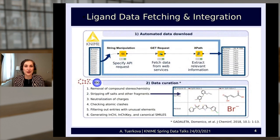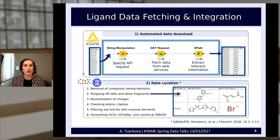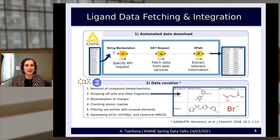To automate the whole procedure we used KNIME, taking advantage of programmatic data access via application programming interfaces (APIs). We specified an input data table with UniProt IDs corresponding to certain protein targets, passed it to the string manipulation node to create a specific API request, fetched data from web services using the GET request node, and finally extracted the relevant information.